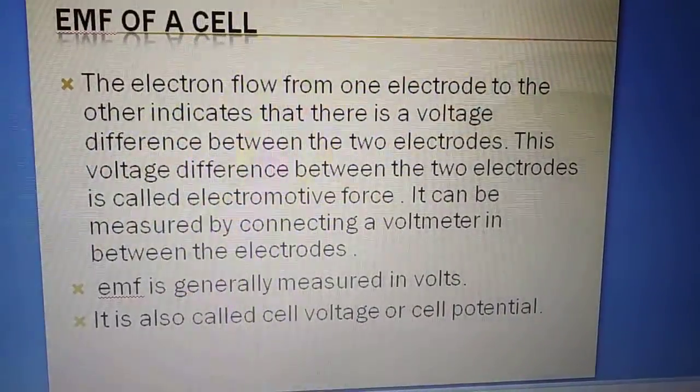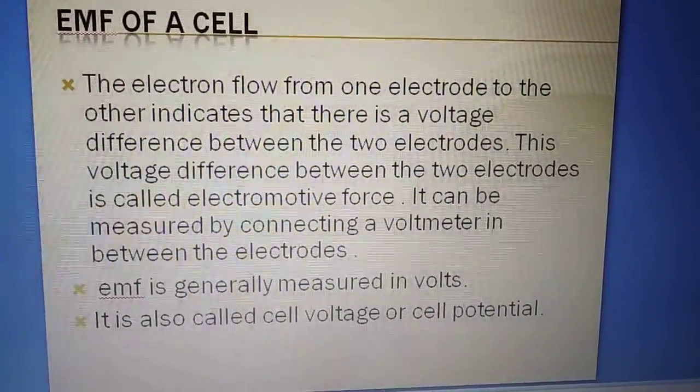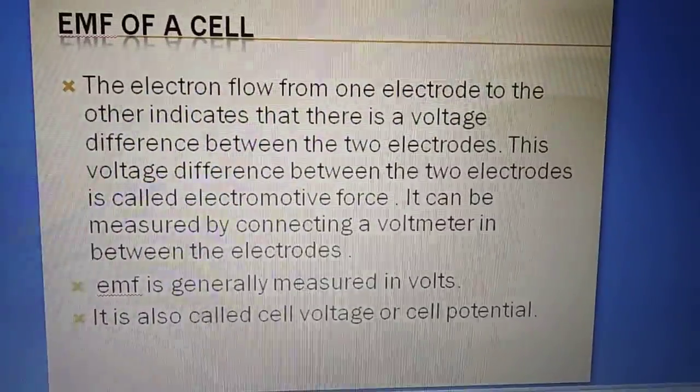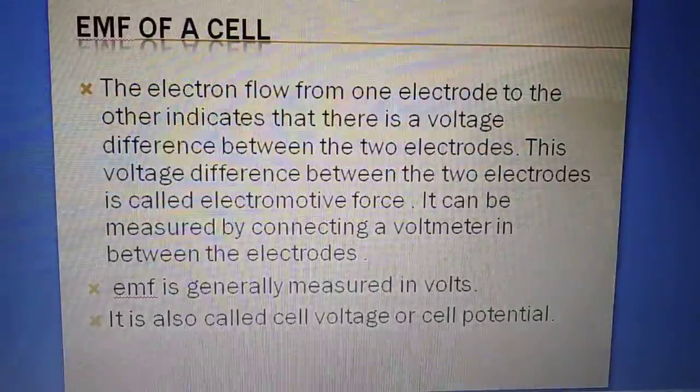The oxidation half cell is the anode and the reduction half cell consists of the cathode.